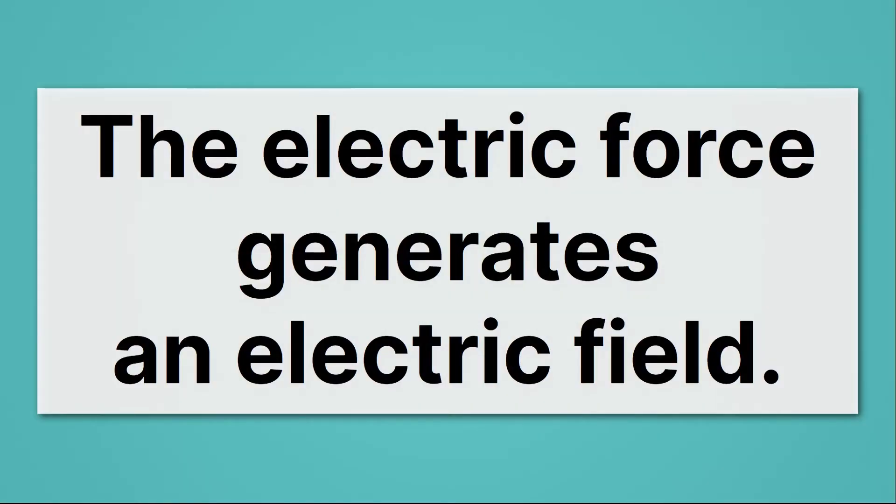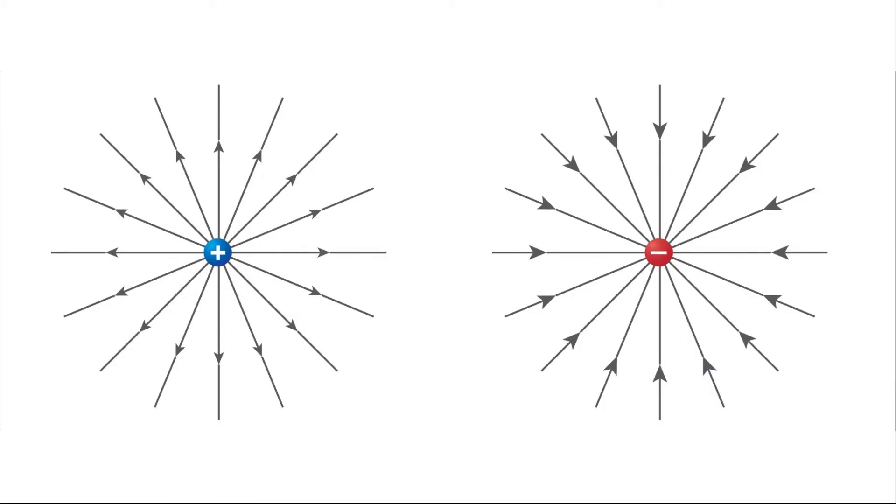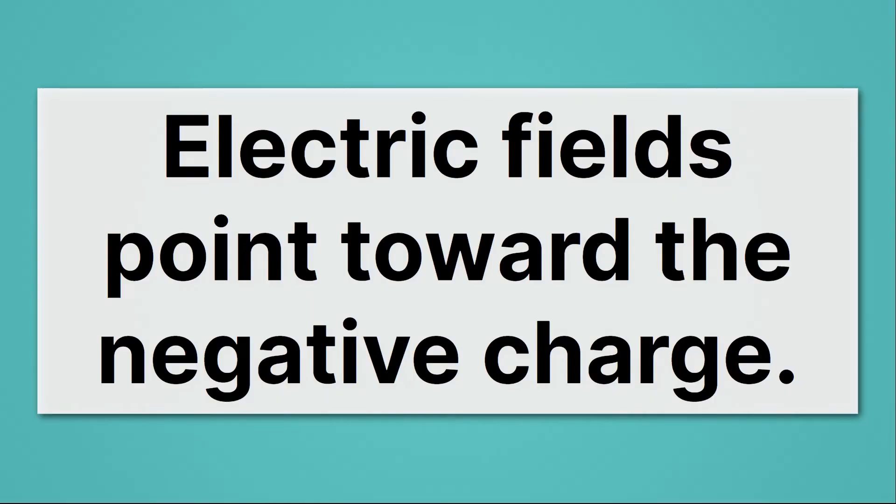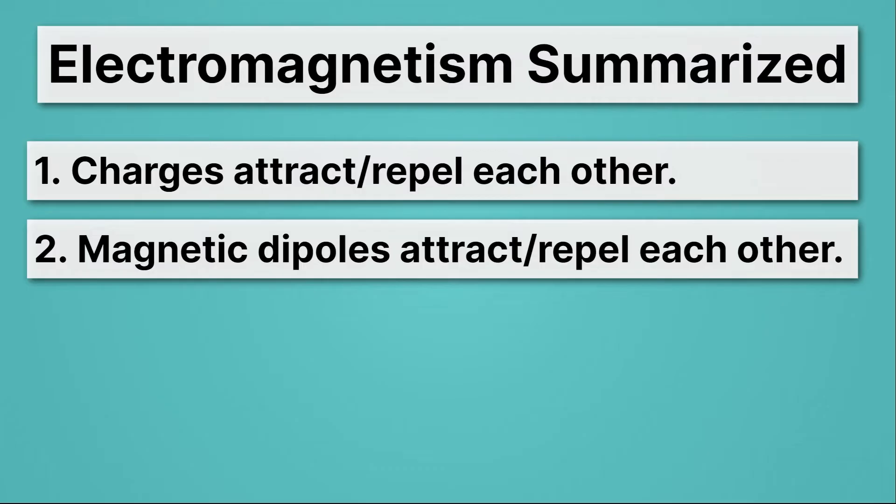The electric force generates an electric field. Here we see electric fields around charges. Notice that the arrows are pointing away from the positive charge and towards the negative charge. Electric fields always point towards the negative charge. Okay, so that's the first principle.